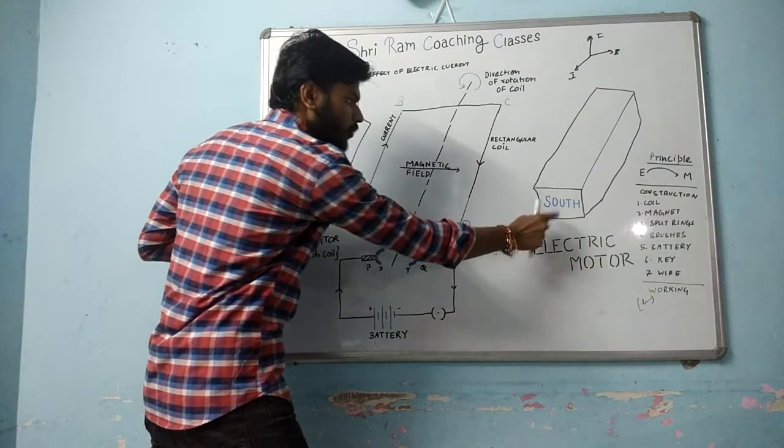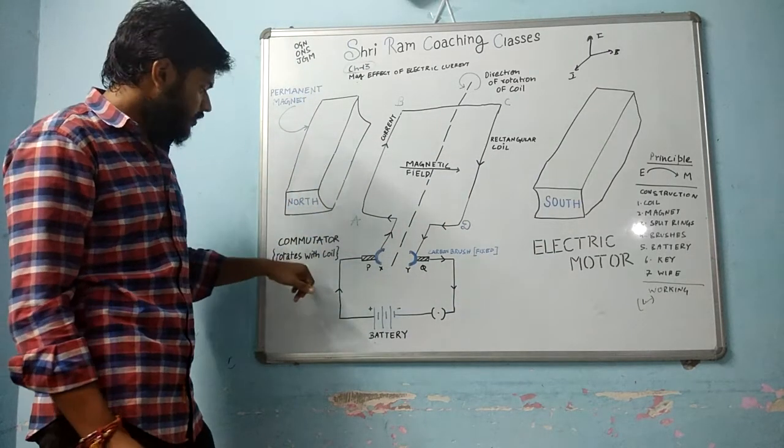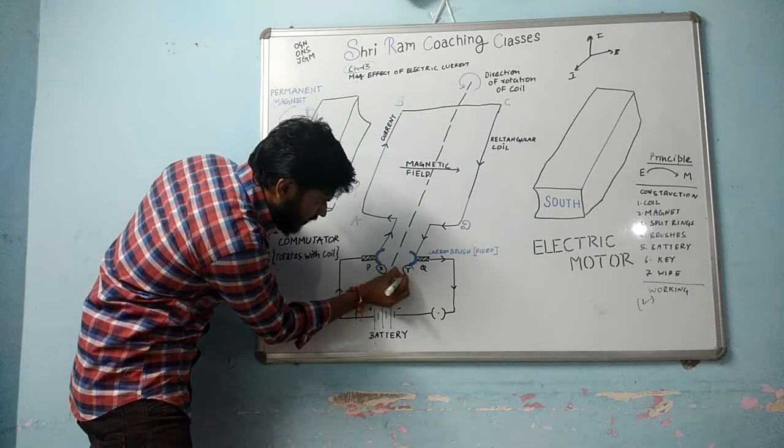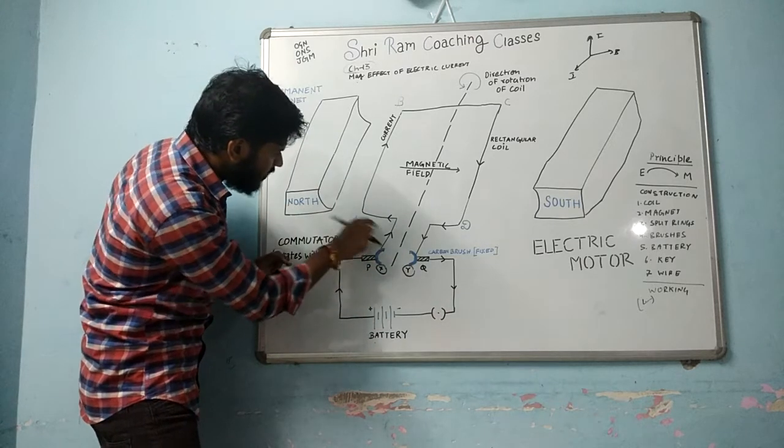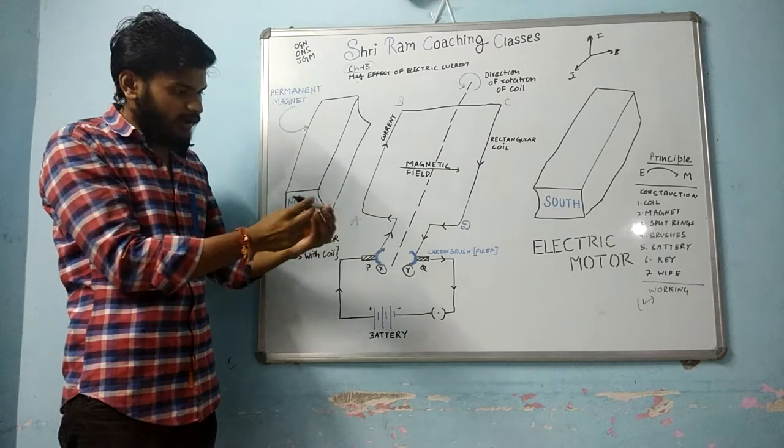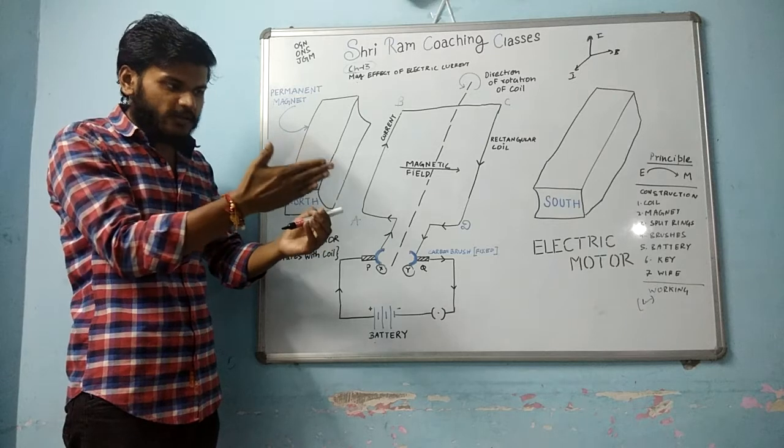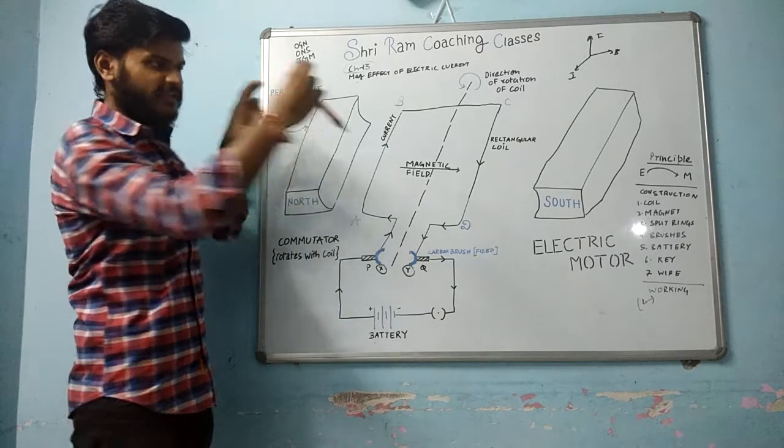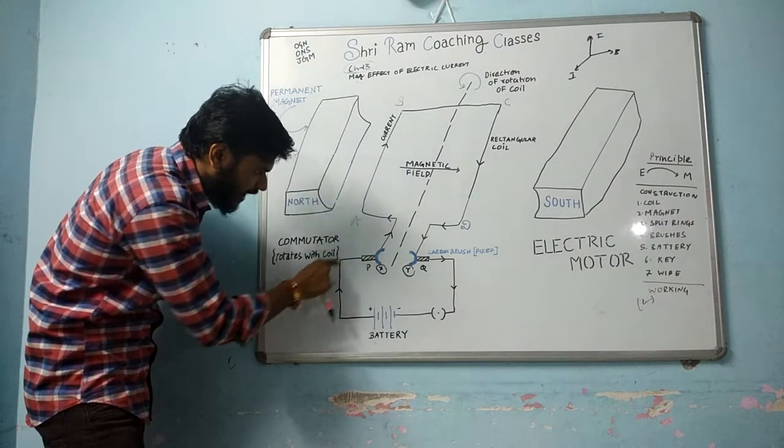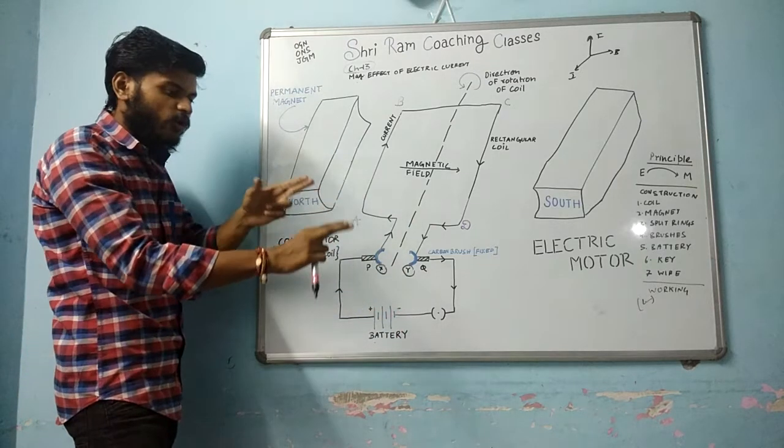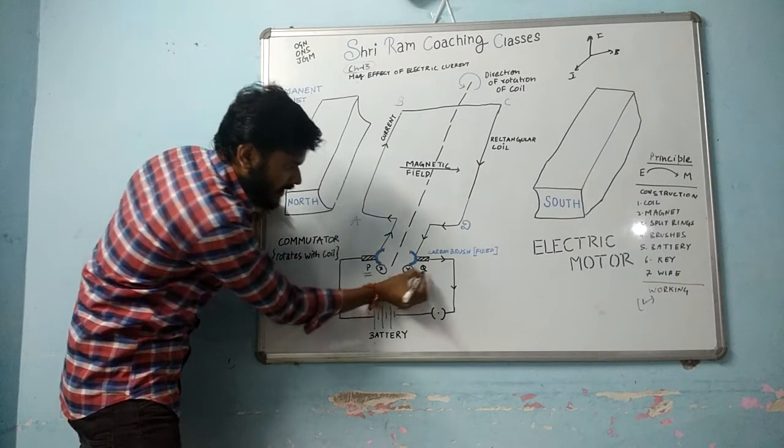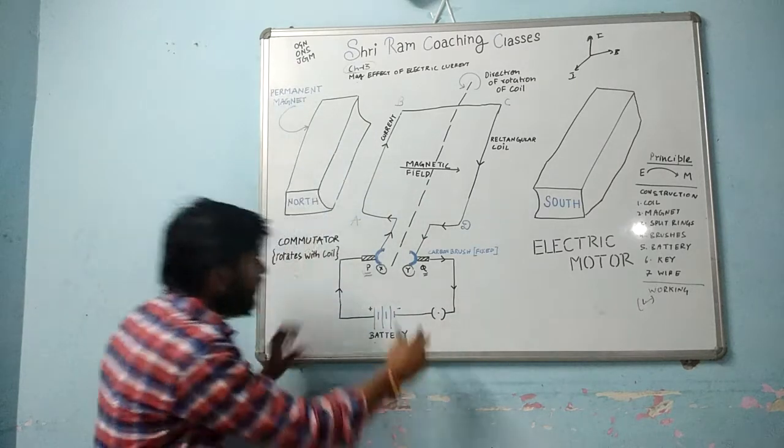This is north pole and south pole. The next thing is split rings. This is the most important part. Two split rings, one is X and one is Y. The ABCD coil has one end at point X and one at point Y. When the coil rotates, the split rings rotate with the coil. This is the carbon brush P, and the second is Q. These brushes are fixed.